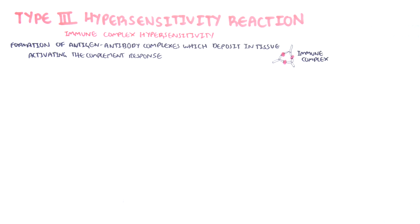But when not cleared, immune complexes will deposit into various tissues, where they induce complement activation. Complement proteins are circulating proteins which, when active, trigger a cascade promoting the inflammatory response.